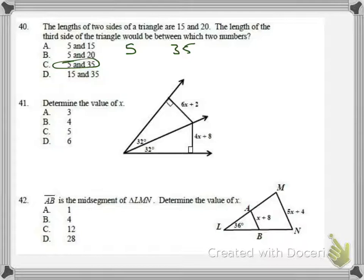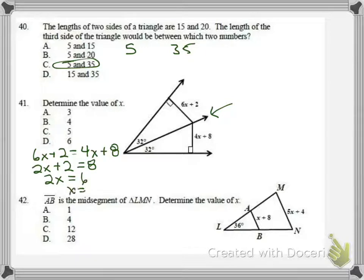In number 41, we have the angles are the same there with the 32 degrees. That means it's a bisector. This side right here. This ray. And that means it's equidistant to the sides. So I'm just going to say 6X plus 2 equals 4X plus 8. I'm going to subtract 4X from both sides. 2X plus 2 equals 8. 2X equals 6. So X equals 3. I want to check to make sure. Plug that back in. 4 times 3 is 12. Plus 8 is 20. 6 times 3 is 18. Plus 2 is 20. Our answer is 3.